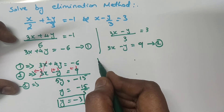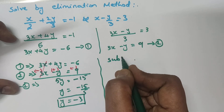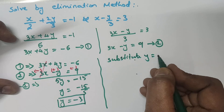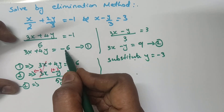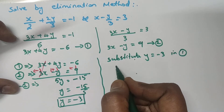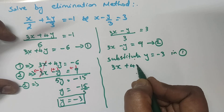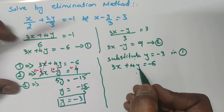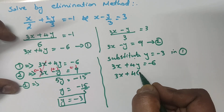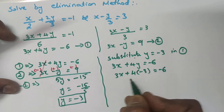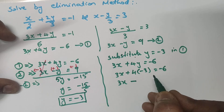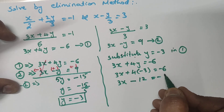Now substitute y equals minus 3 into the first equation: 3x plus 4y equals minus 6. Replacing y with minus 3: 3x plus 4 into minus 3 equals minus 6. So 3x minus 12 equals minus 6.